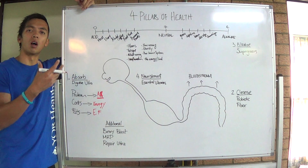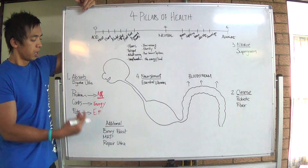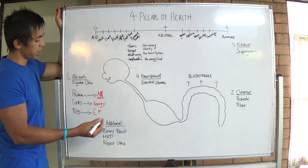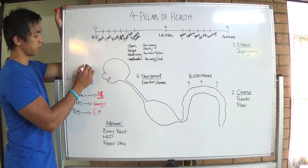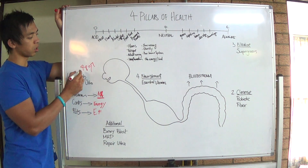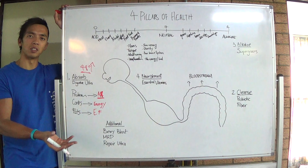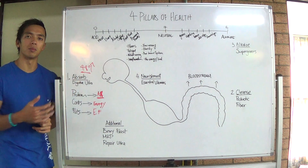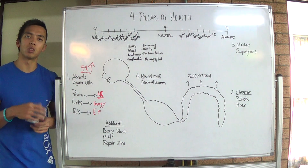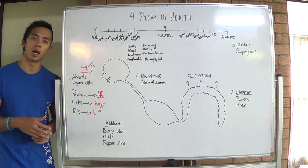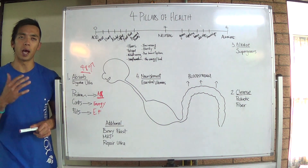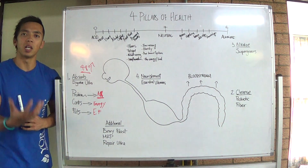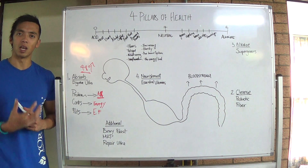Digestive enzymes are also found in raw food, but a lot of people are cooking their foods above 48 degrees. When you cook food above 48 degrees, it destroys 100% of the enzymes. When we're eating all this cooked food with no enzymes, our body has to work extremely hard to produce its own enzymes. Experts say you use around 60 to 80 percent of the body's energy just to break down food.